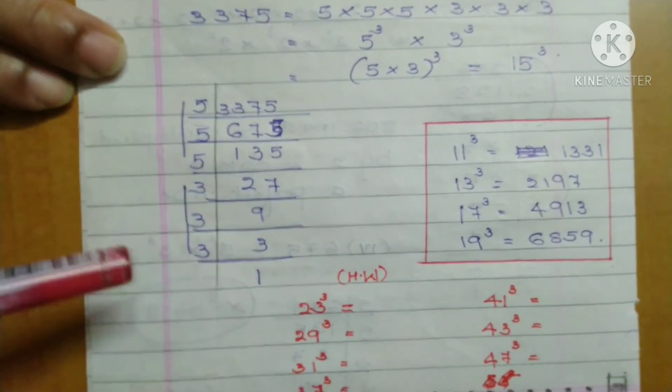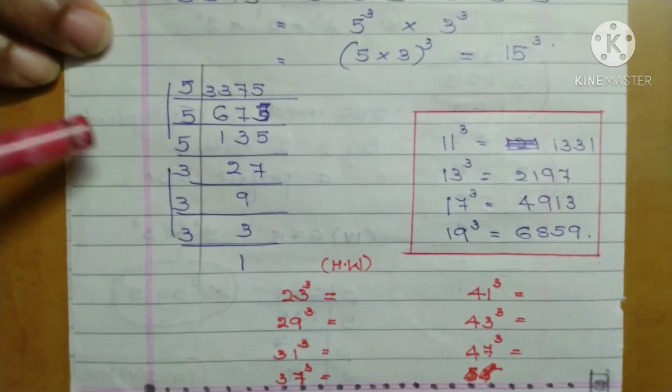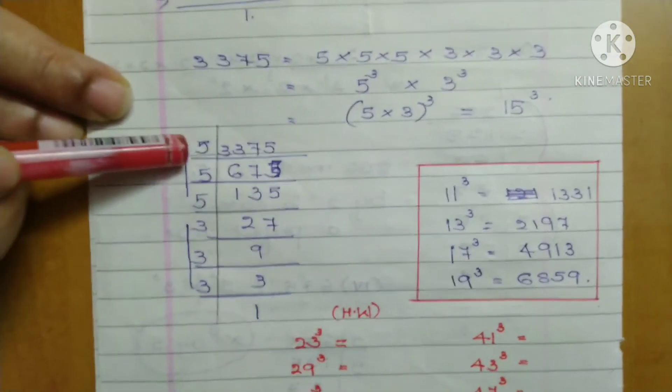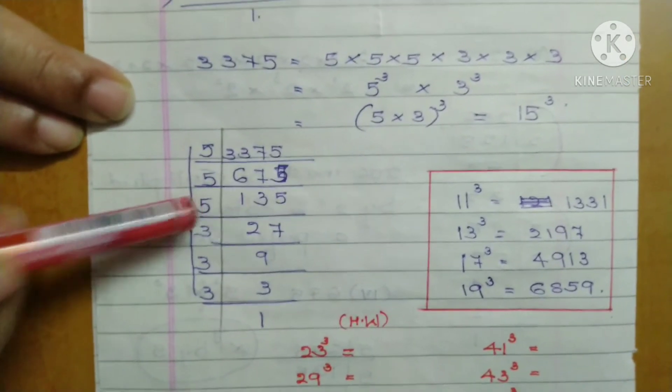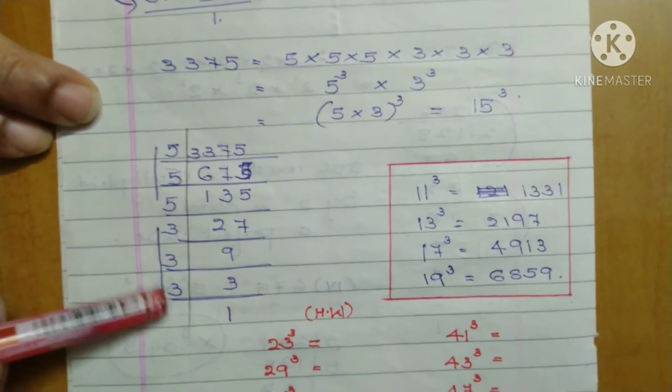The same way, make groups of 3 numbers. Here 5 appears 3 times and 3 appears 3 times.